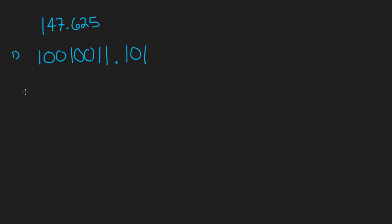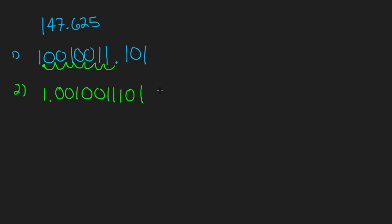Now that we have the binary, the next goal is to take this decimal point and move it until it hits the first one. We go one, two, three, four, five, six, seven — so we moved it over seven spaces. This gives us 1.001001110 1 times 2 to the seventh, noting it's times two because we're in base two.